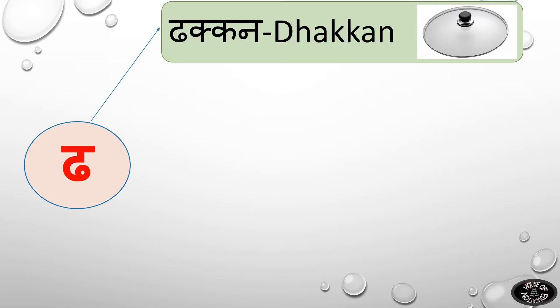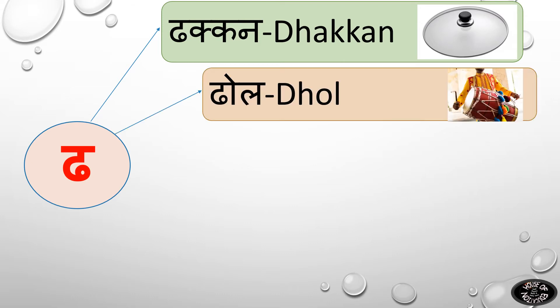D say Dagan. Dagan means lead. Dha say Dhol. Dhol is one type of drum.